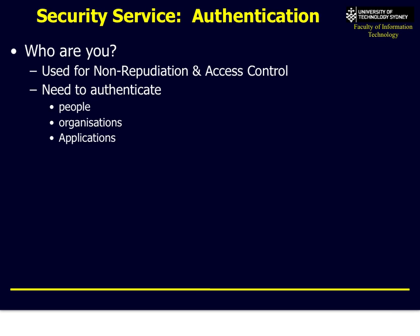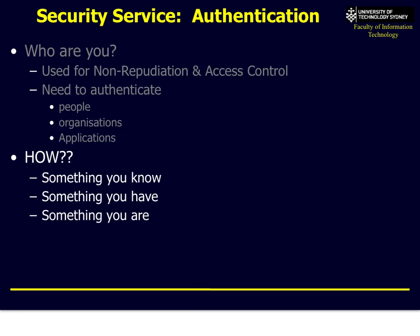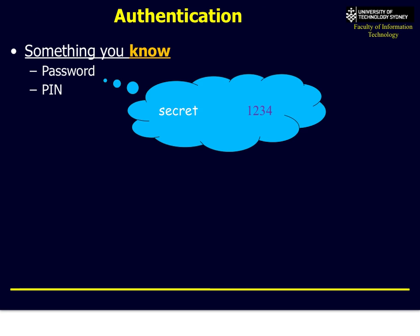Another service commonly associated with security is authentication. It's used for many things: who are you, what's your authority level, are you part of UTS, are you allowed to use this application such as UTS Online? How do we work out who a person is? The most obvious method is a password or PIN number — something you type in at a website or ATM. It's something that you know, and hopefully you've never shared with anybody else.